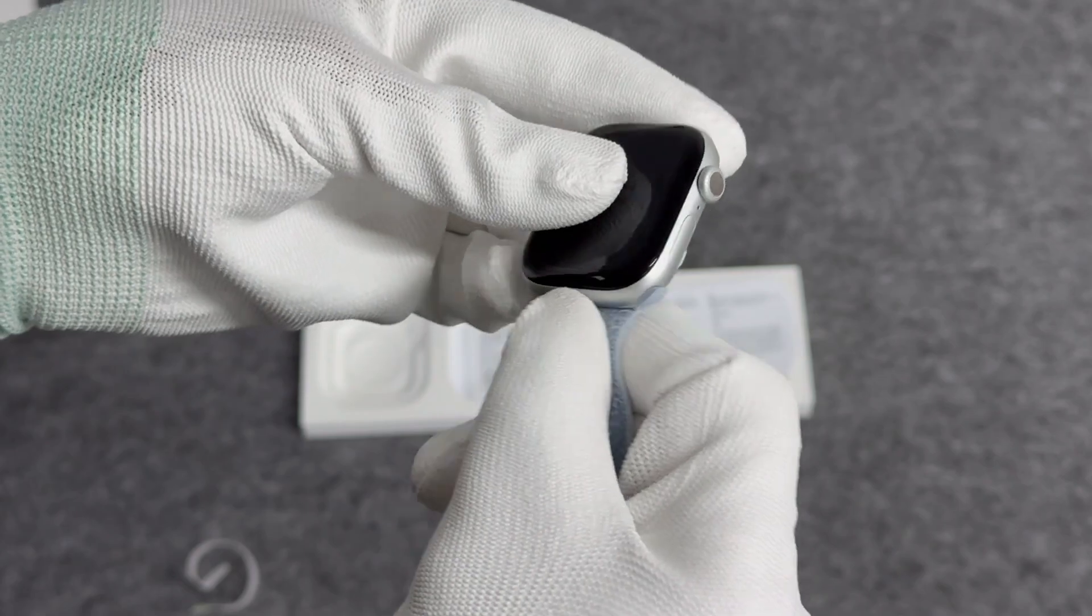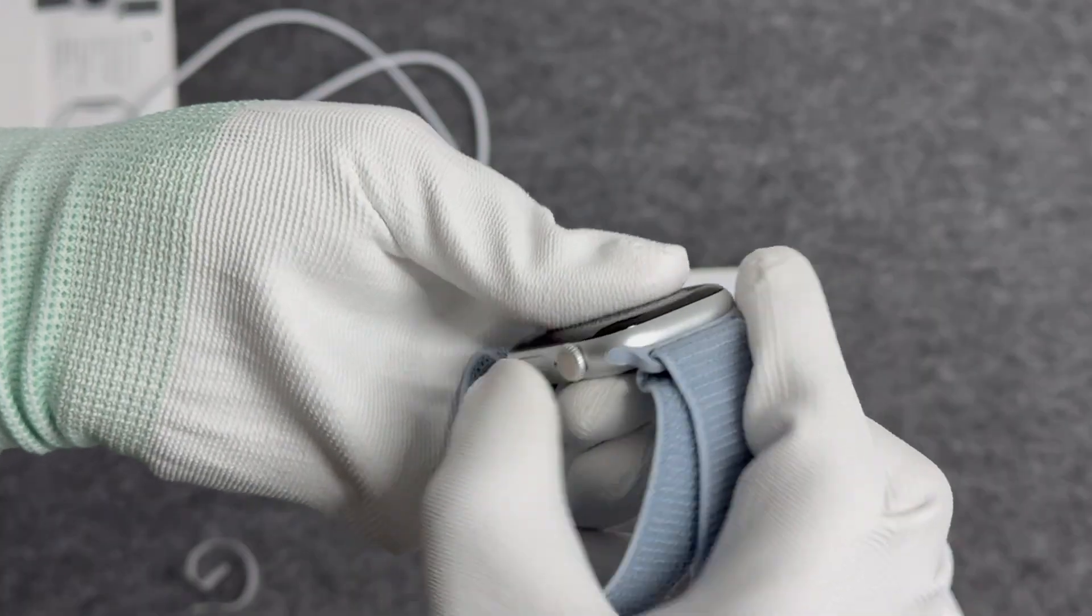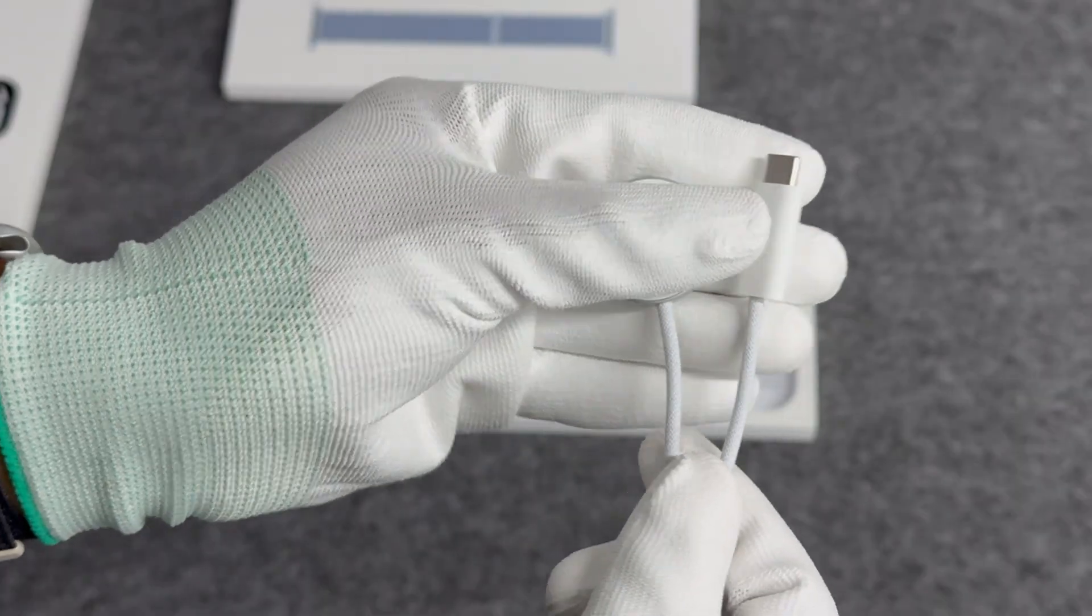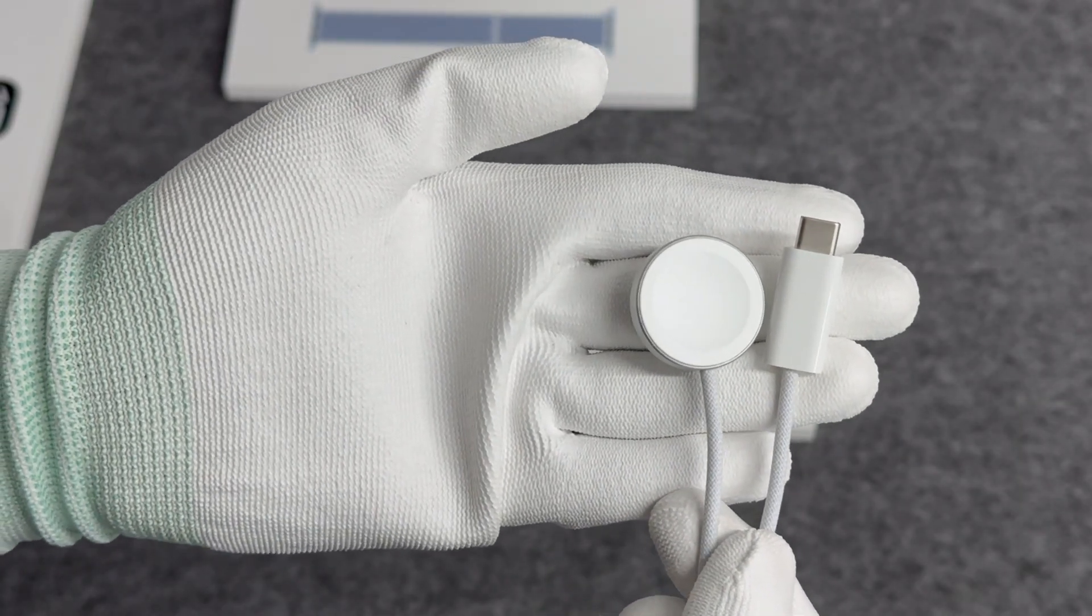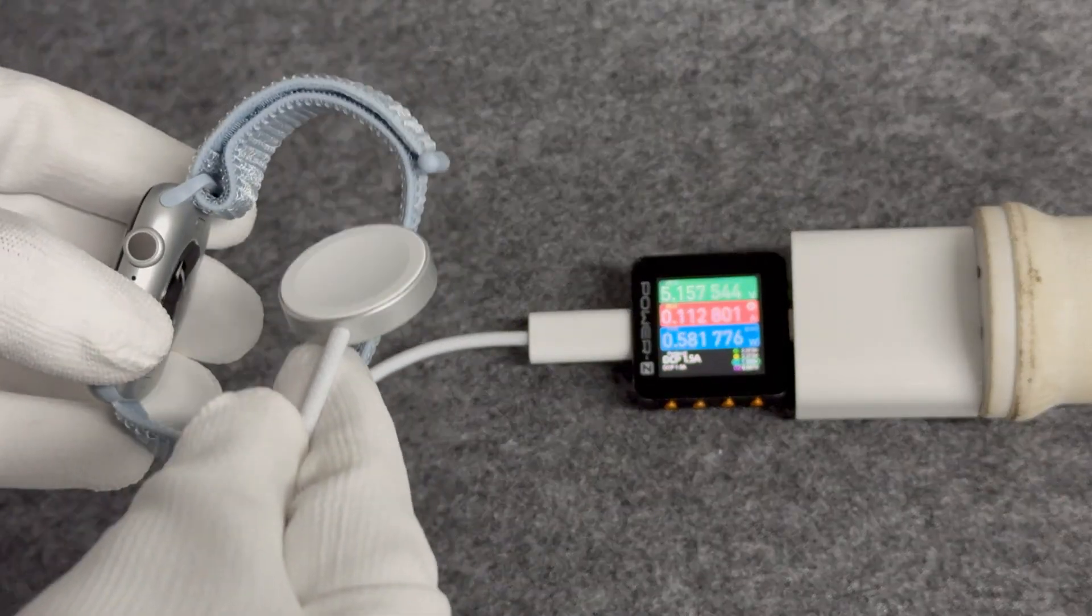Although the Apple Watch Series 10 uses the same charger as before, the actual charging power is almost halved, with a peak of about 2.5 watts. It takes about an hour to charge to 80%, and 1 hour and 36 minutes to be fully charged.